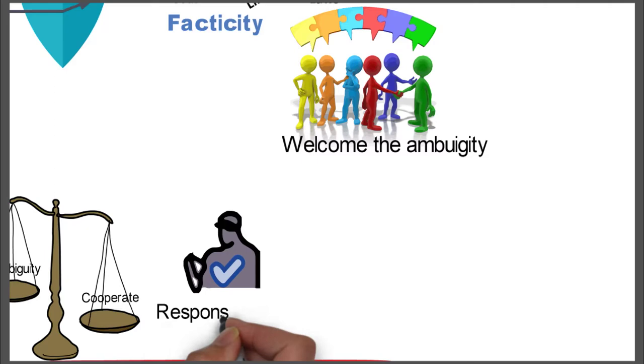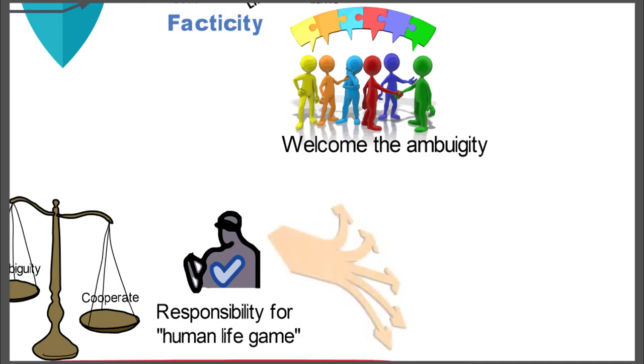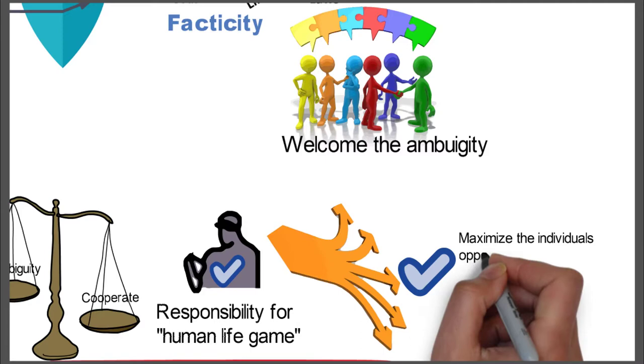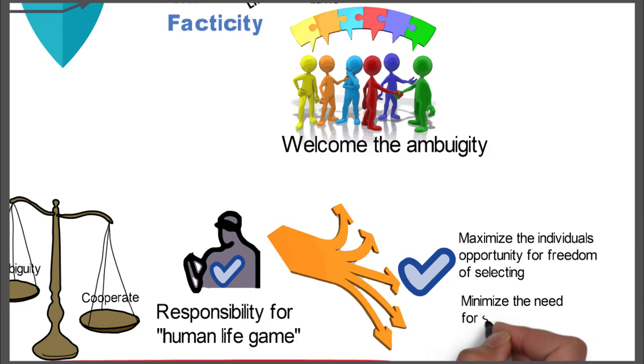Basically we take this responsibility as an individual for the human life game, our own responsibility for our own human life game. And so the best way to do that is to maximize the individual's opportunity for freedom of selecting, but also minimize the need for selecting.